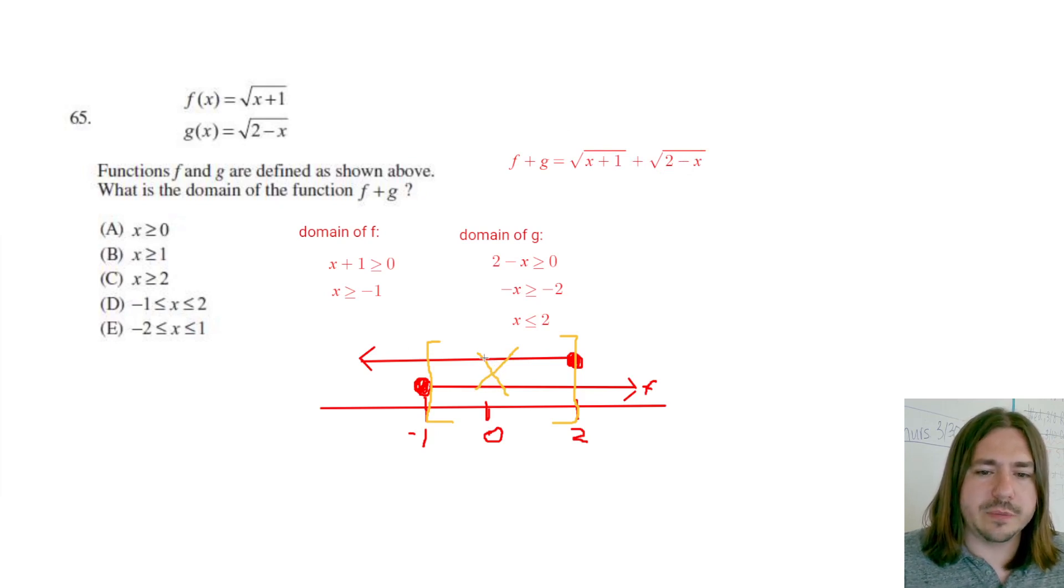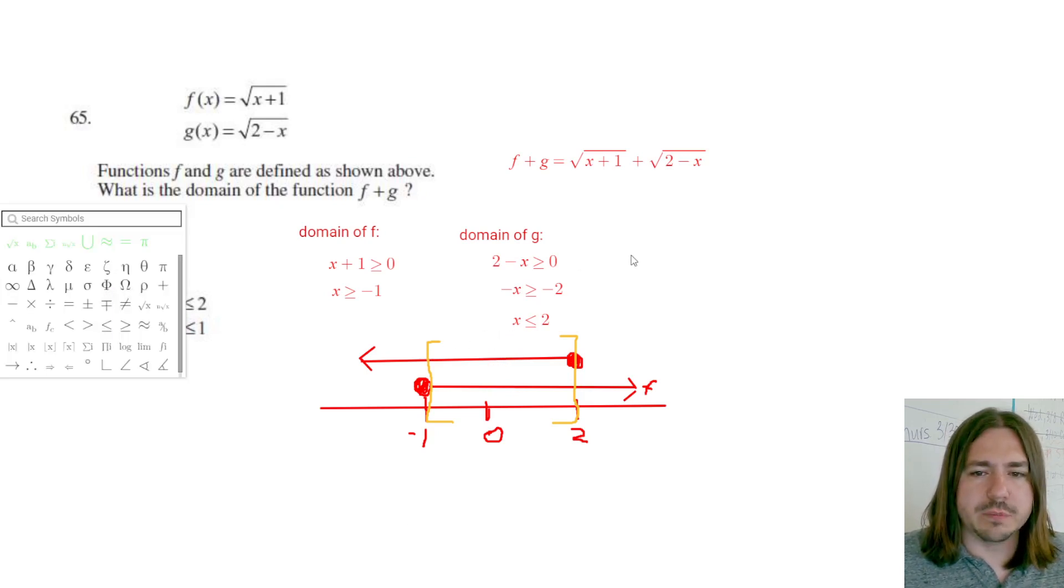So this is where we want x to be. Maybe I don't write x here because then it looks like I'm xing it out. But this is where we want x to be. So x is going to be in between and including negative 1 and 2.